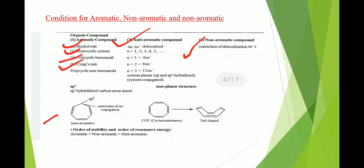Consider this example: it contains six pi electrons plus one sp3 hybridized carbon atom. However, for a compound to be aromatic, carbon atoms must be sp2 or sp hybridized. Since this contains an sp3 hybridized carbon atom, it is not aromatic — it is classified as non-aromatic. Similarly, cyclooctatetraene has a tub shape; there is a restriction of delocalization of electrons, so it is also classified as non-aromatic.